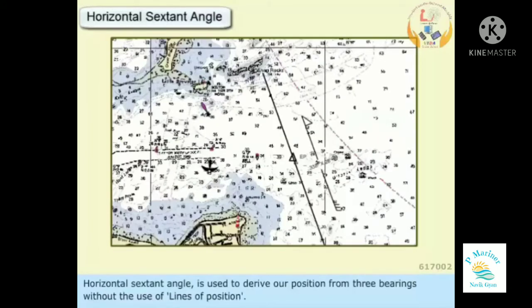Horizontal sextant angle, also known as Snellius construction, is used to derive our position from three bearings without the use of lines of position.